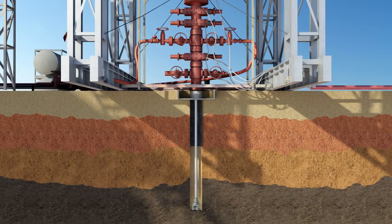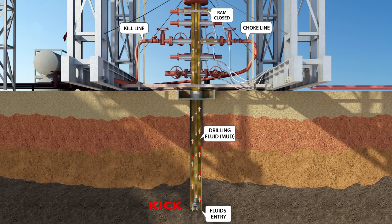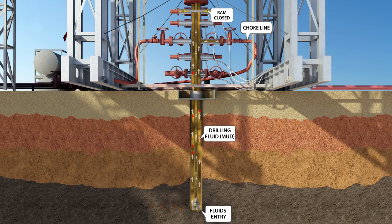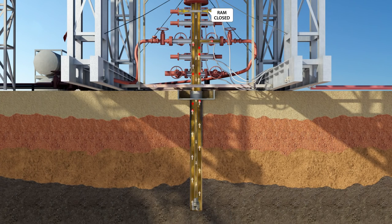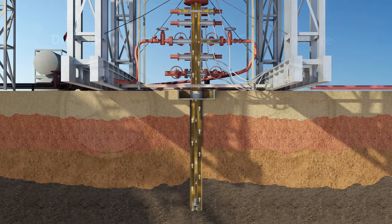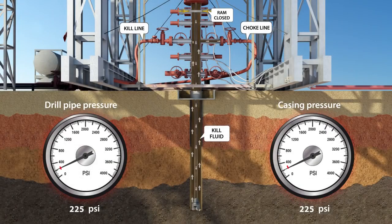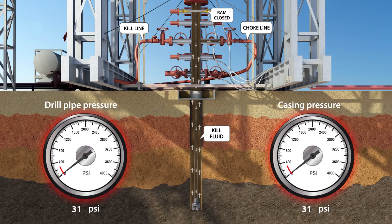The kick will be circulated out of the wellbore using the driller method first cycle, by pumping drilling fluid downstream and getting returns from the annulus through the choke line to the choke manifold. Toxic gases will be flared through the poor boy degasser. Once the kick is out, the well will be shut in, then killed with weighted mud by circulating kill fluid until both the drill pipe and casing pressures reach zero.